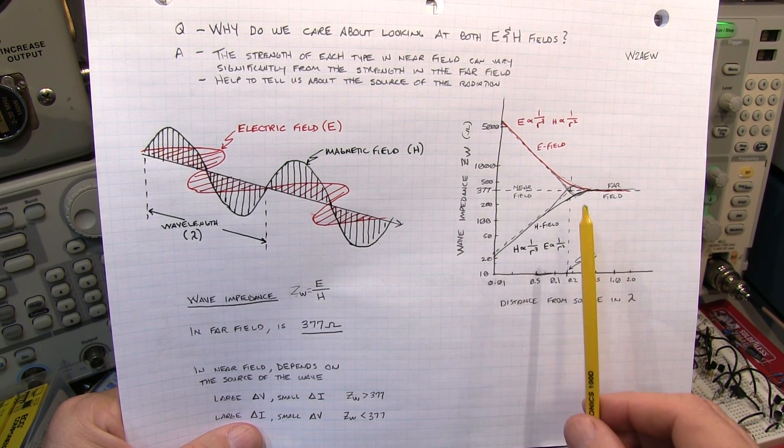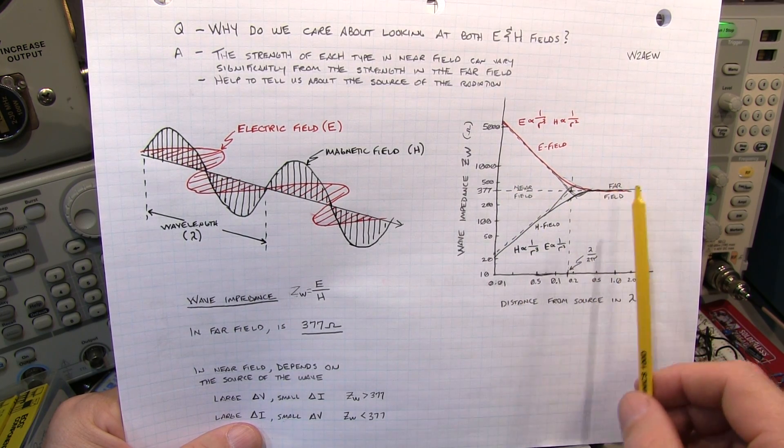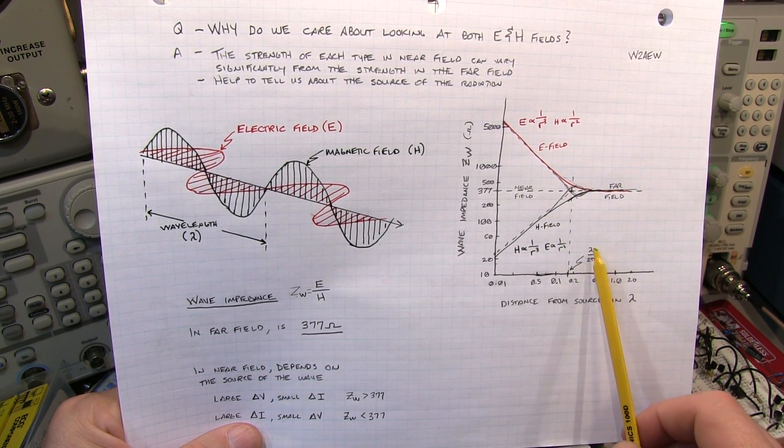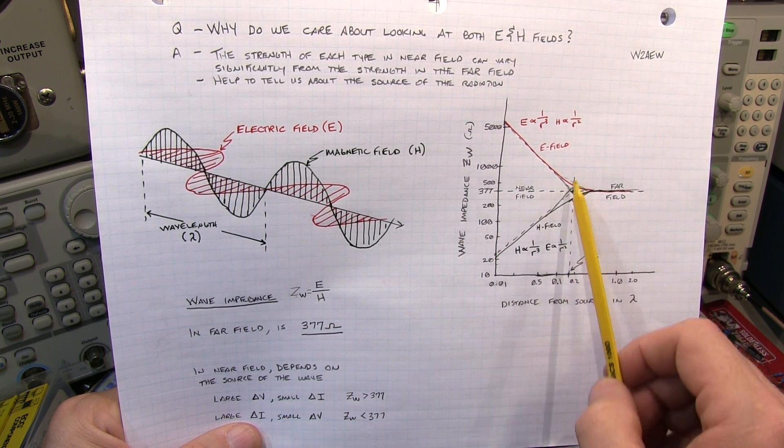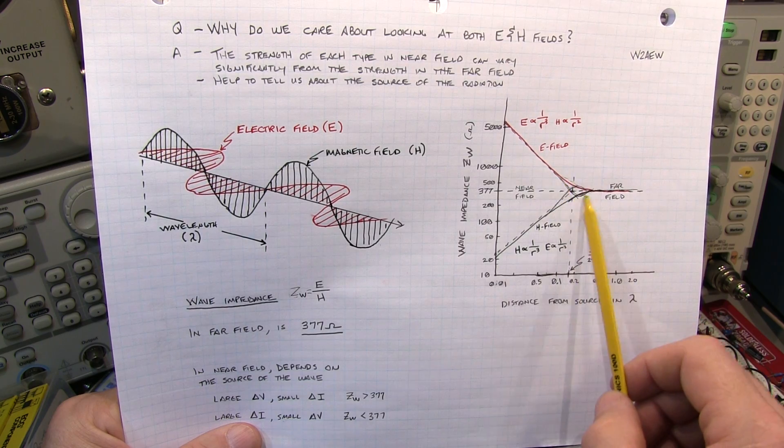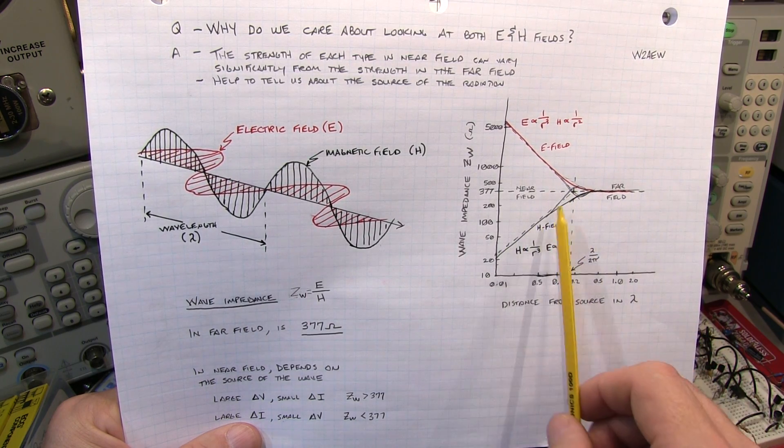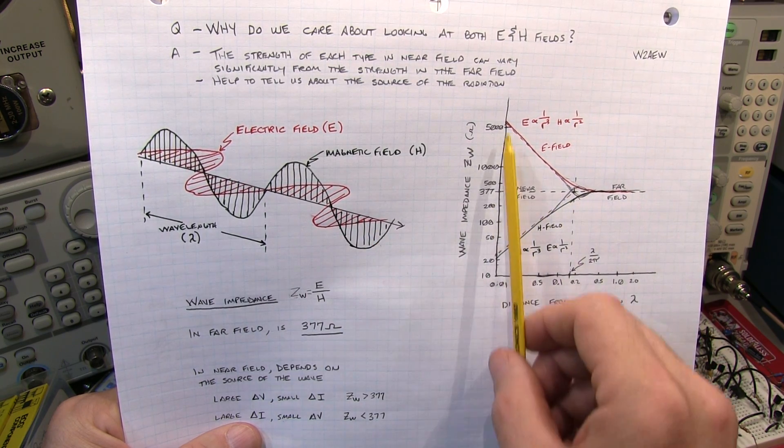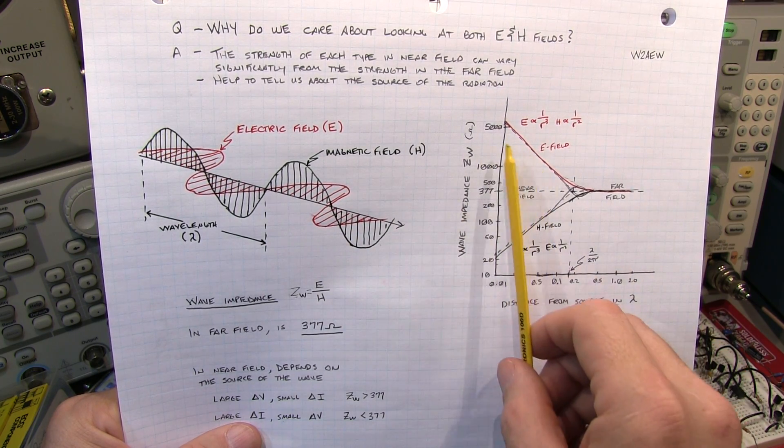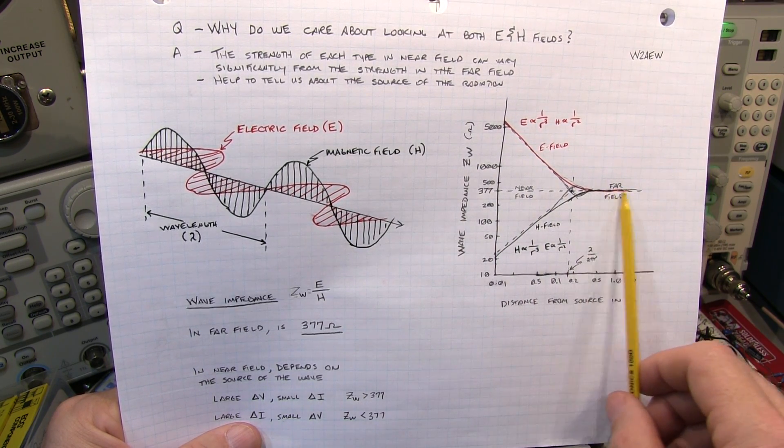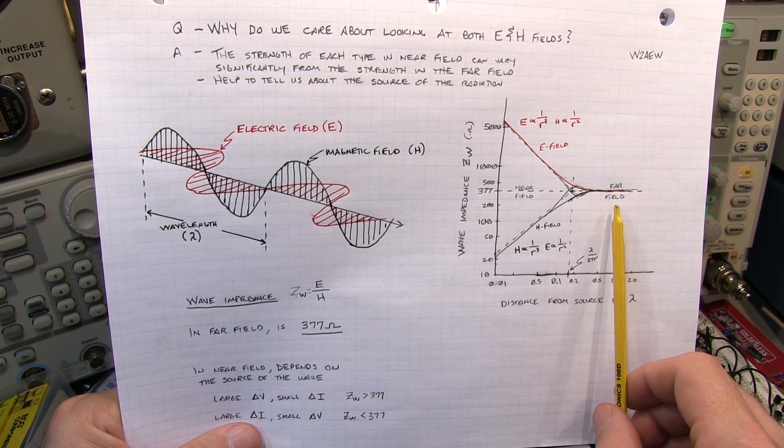Most references that you'll look up when talking about near field and far field, will kind of quote this value, the signal's wavelength divided by 2 pi, or about 15% of the wavelength, as right about the transition point from where the wave impedance will transition from being controlled or dominated by the circuit impedance to being the 377 ohms that you see in the far field.